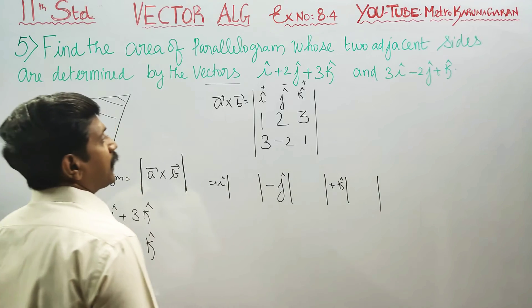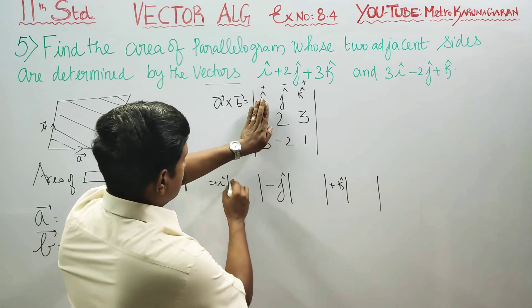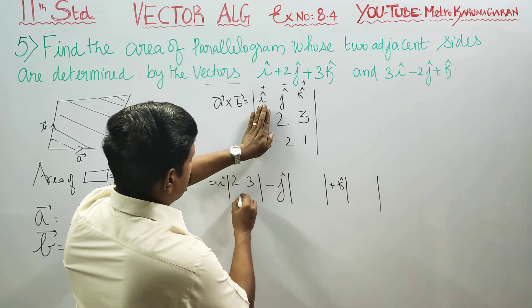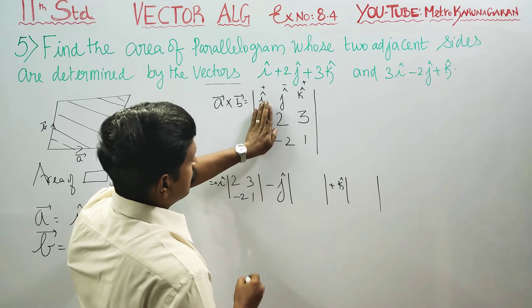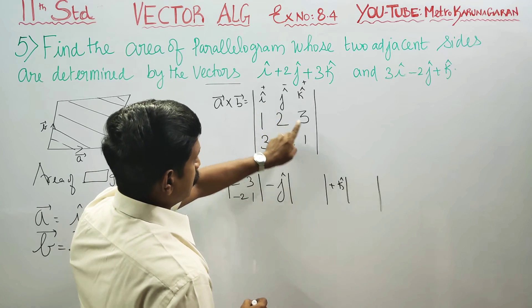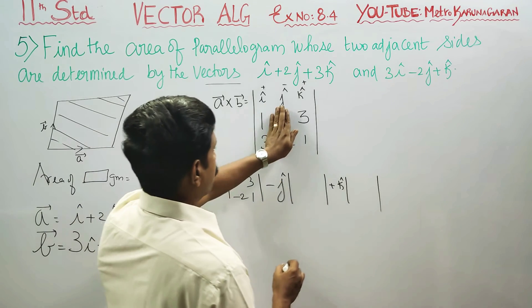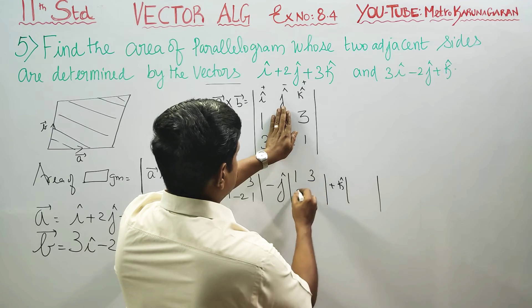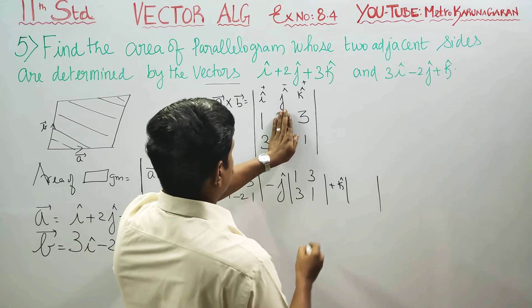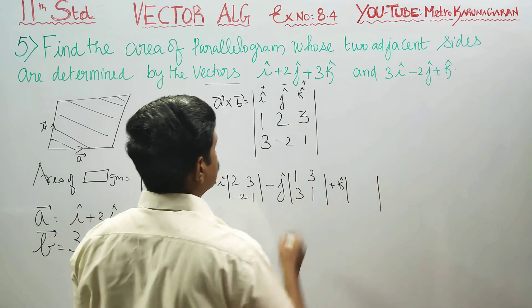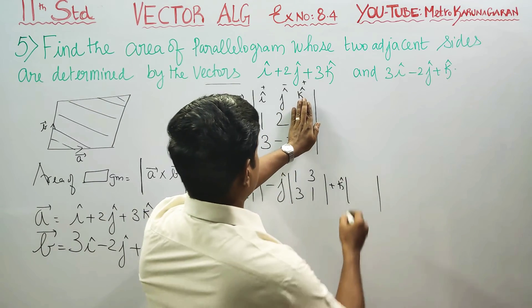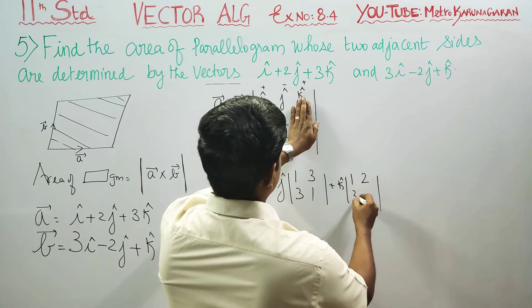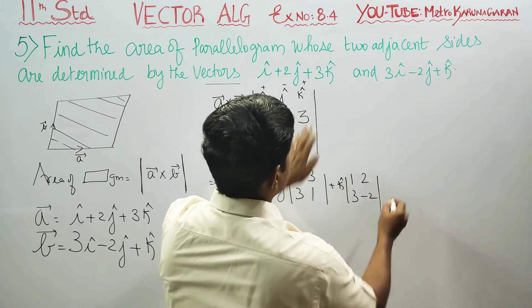For i cap, the minor is: 2, 3, minus 2, 1. For j cap, the minor is: 1, 3, 3, 1. For k cap, the minor is: 1, 2, 3, minus 2.